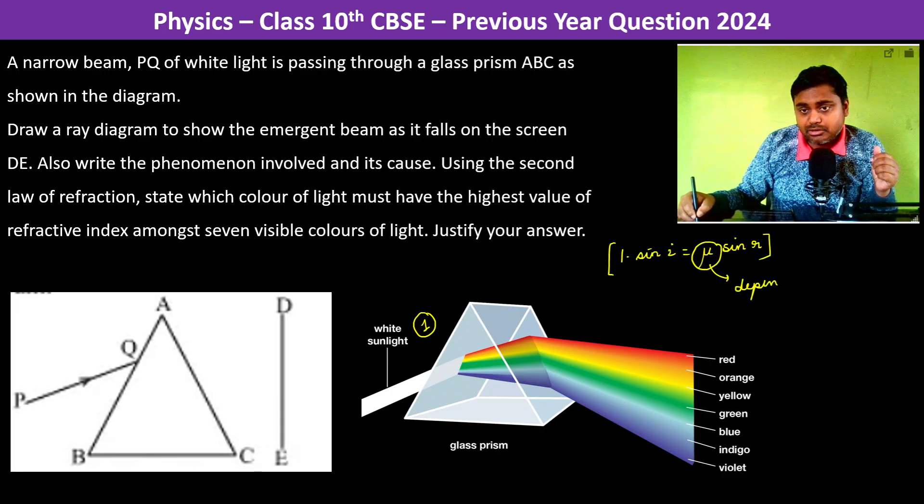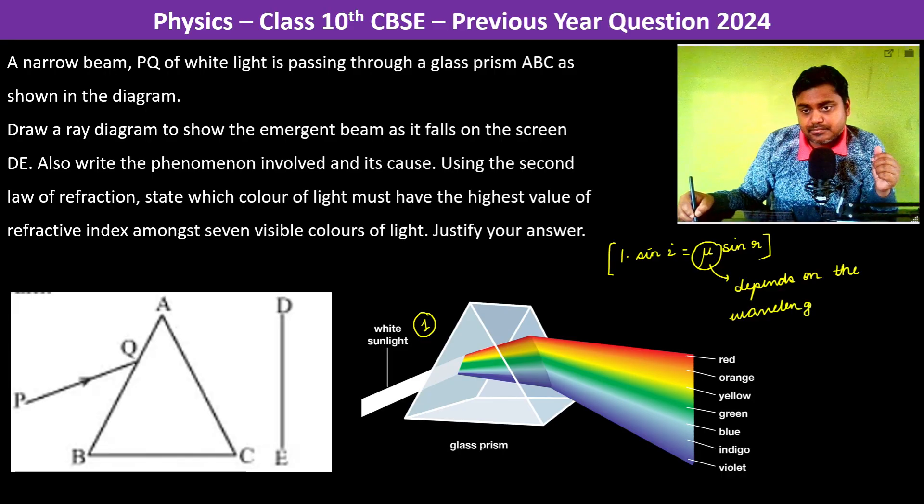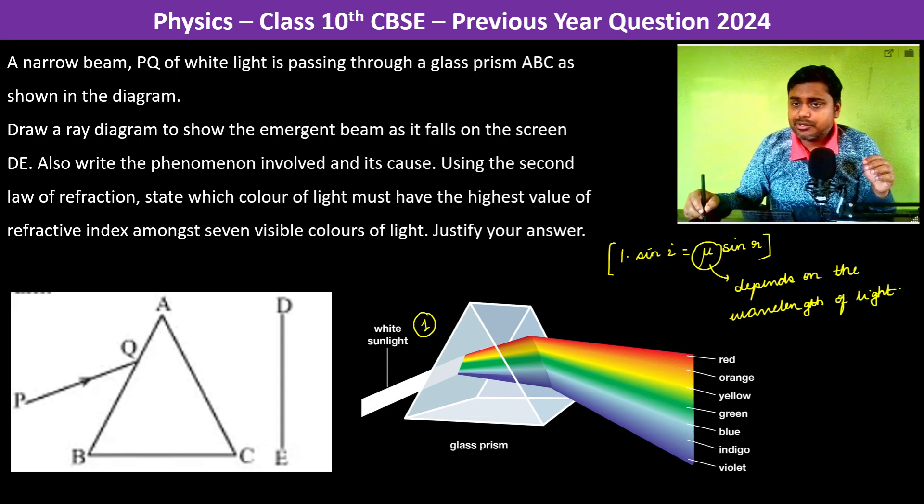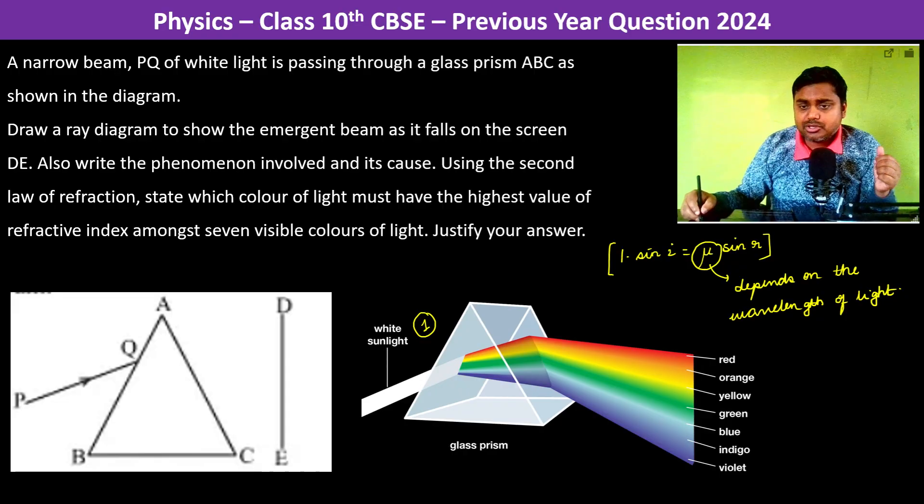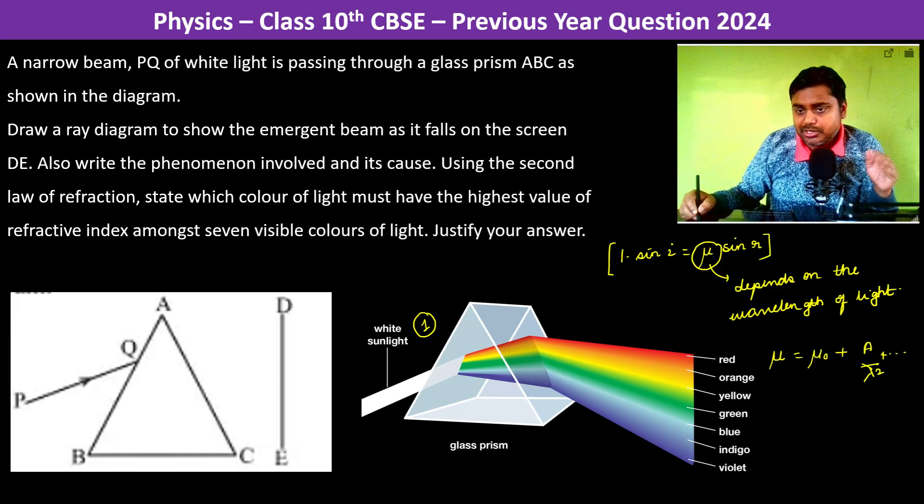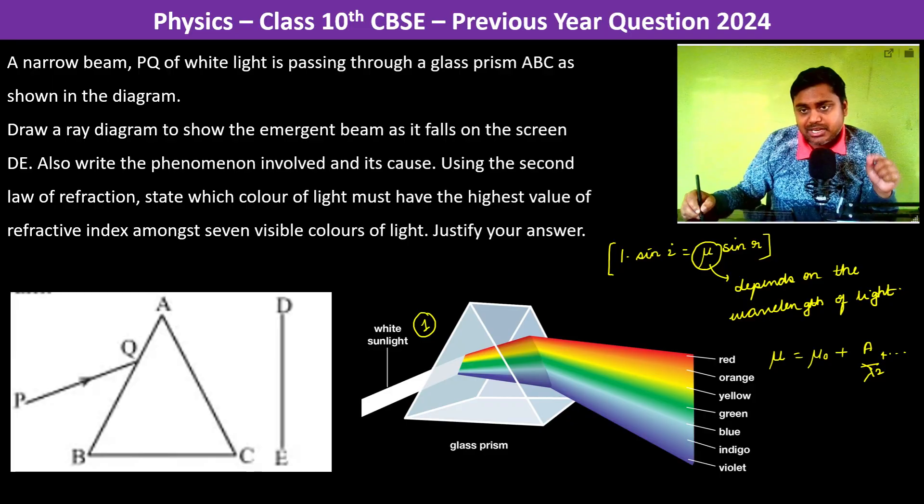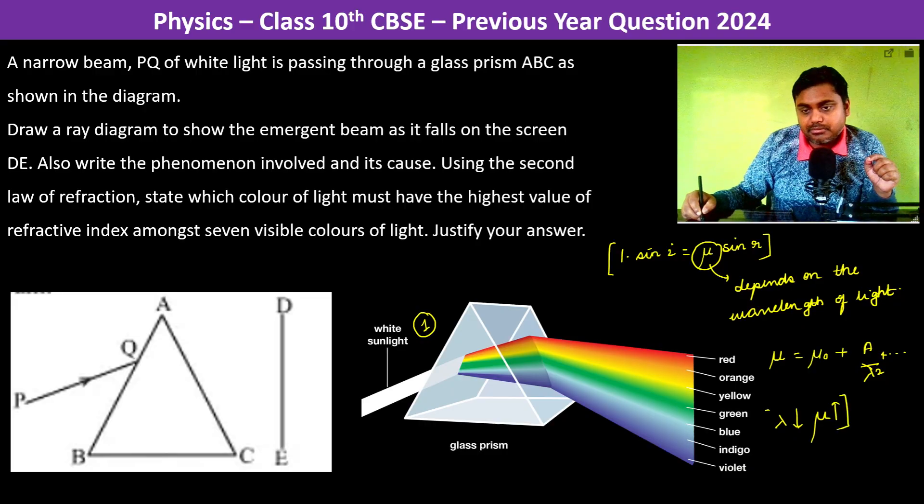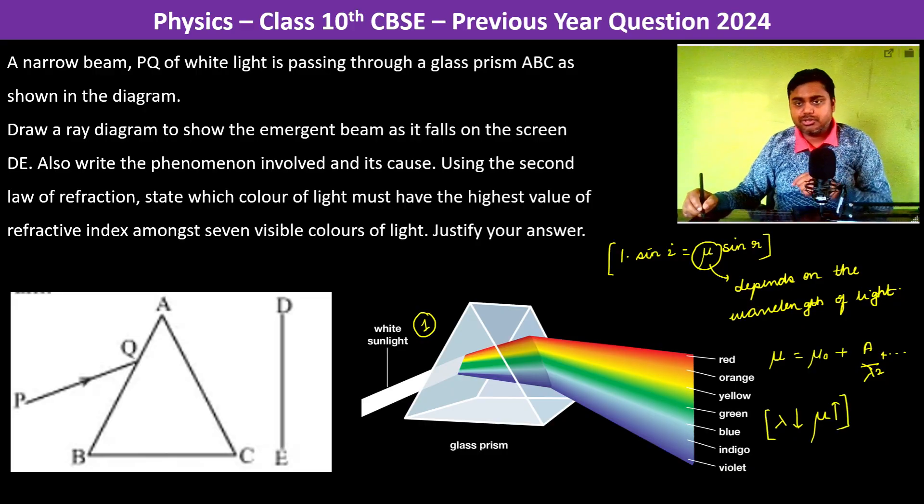Now how it depends? So there is Cauchy's theorem. That theorem is in our syllabus. So there is Cauchy's theorem which tells that µ = µ₀ + a/λ² and so on and so forth. So point is that whichever λ is less, the refractive index is going to be more. That is what Cauchy's theorem states.